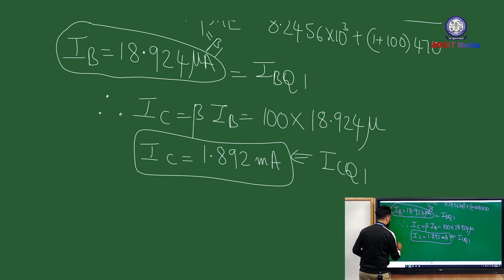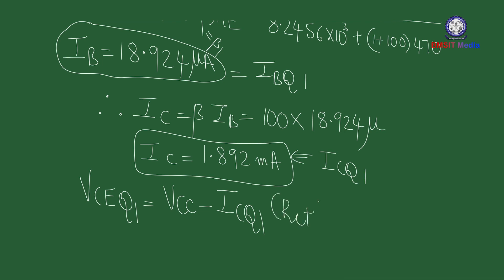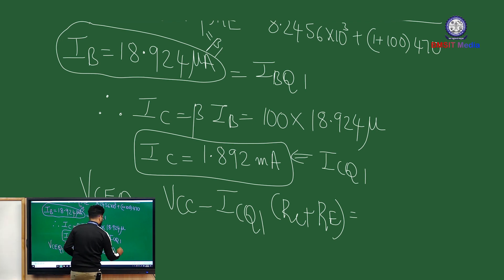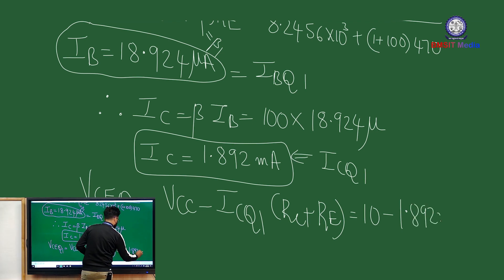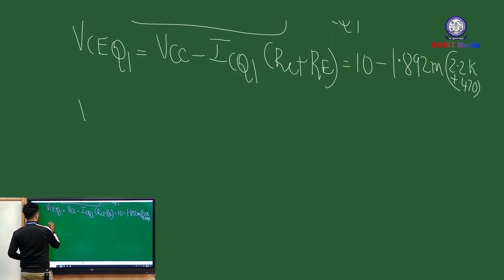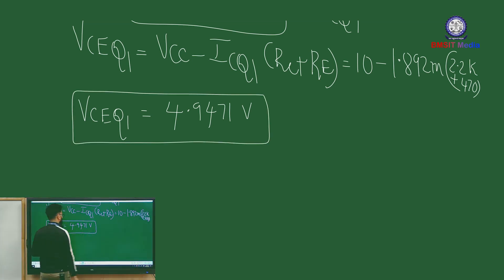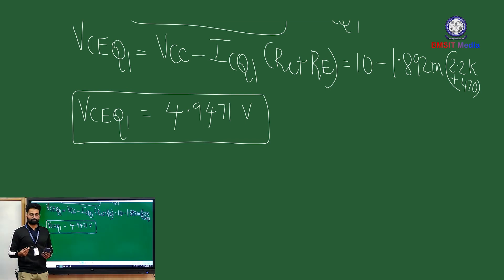Once ICQ1 is found, calculate VCEQ1: VCEQ1 = VCC − ICQ1 × (RC + RE) = 10 − 1.892×10⁻³ × (2200 + 470) = 10 − 1.892×10⁻³ × 2670 ≈ 4.947 V. So for β = 100, the Q-point coordinates are ICQ1 ≈ 1.892 mA and VCEQ1 ≈ 4.947 V.